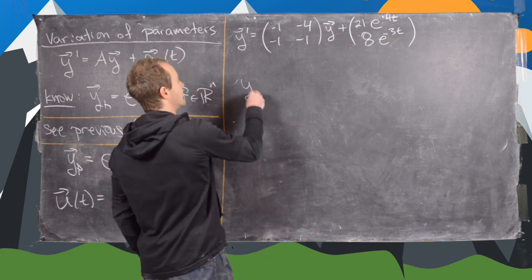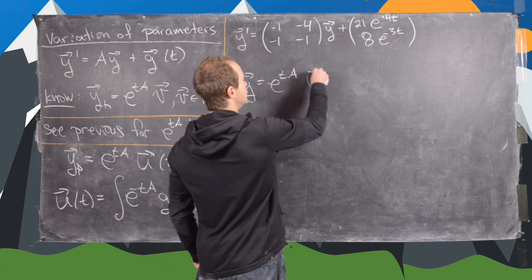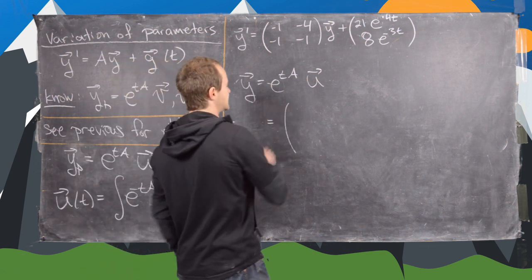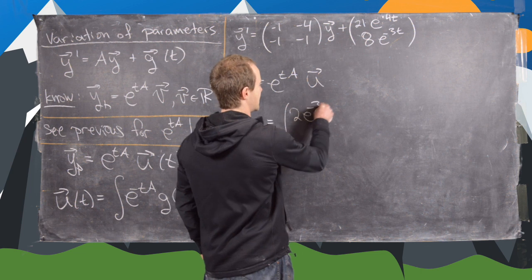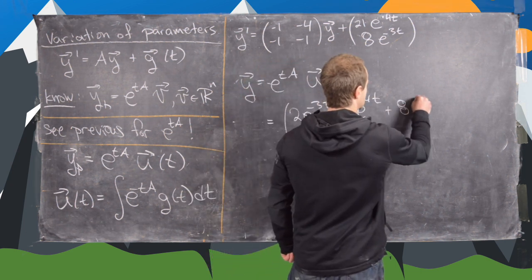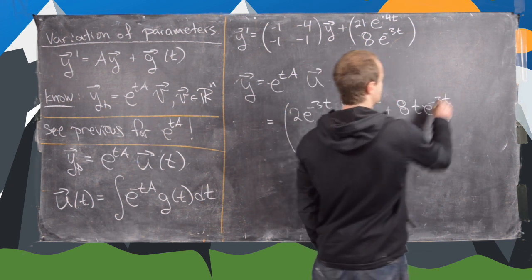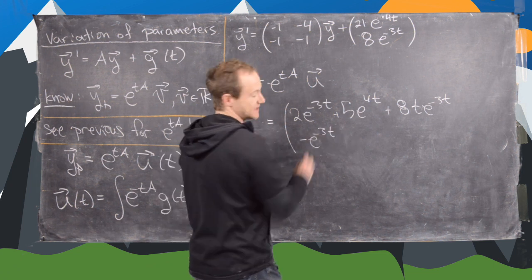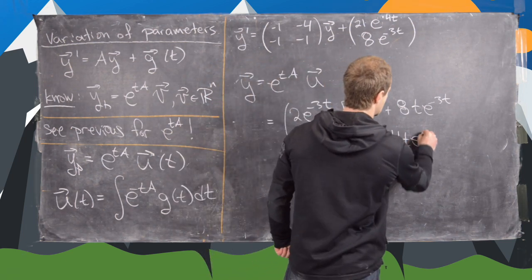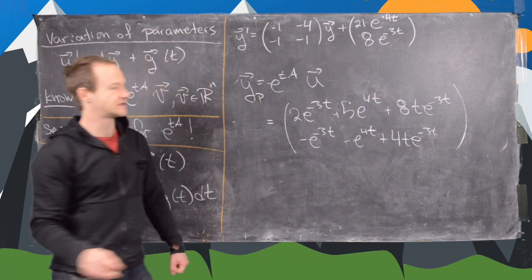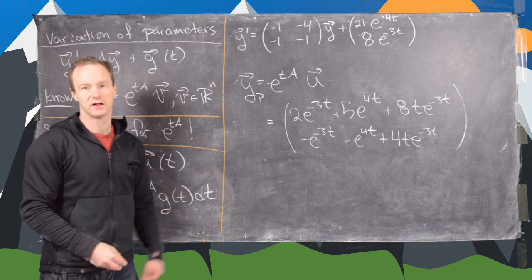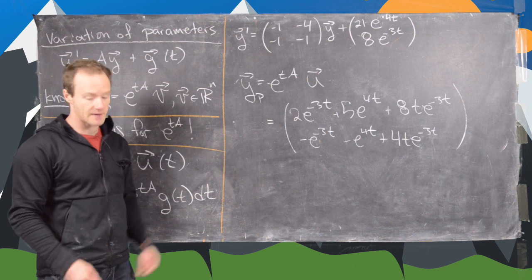Now we're ready to finish. We have y_p equals e^(tA) times u, which we calculated on the last board. After multiplying it all out, we get the vector function with top entry 2e^(-3t) + 5e^(4t) + 8t e^(-3t), and bottom entry -e^(-3t) - e^(4t) + 4t e^(-3t). That is our particular solution. Of course you also need to find the homogeneous solution for a full solution, but there are other videos on that. That's the end of this video.